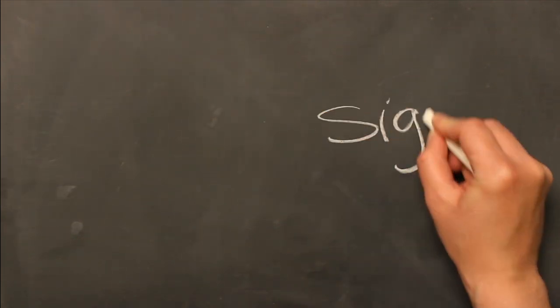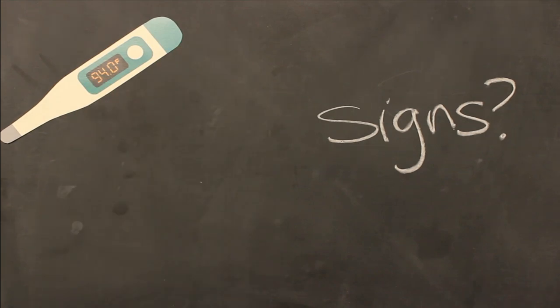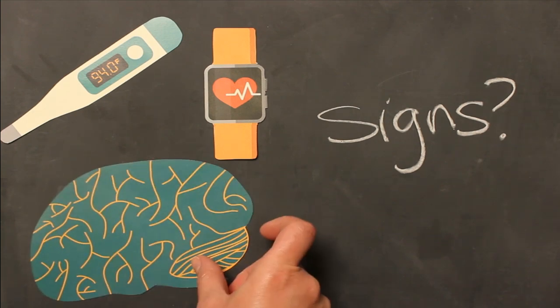What are the possible signs? A body temperature above 101.3 or below 95. A rapid heart rate or labored breathing. A change in mental status, such as confusion.